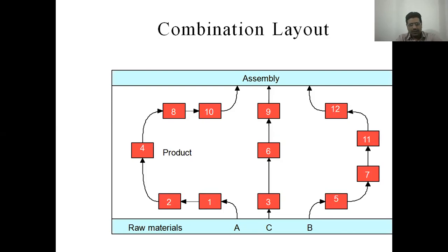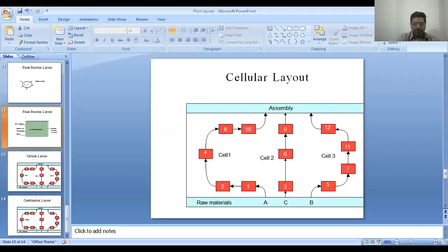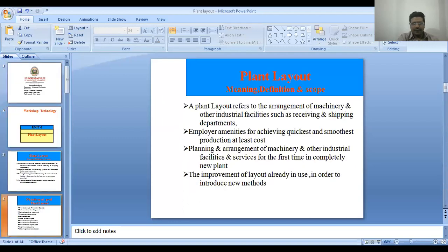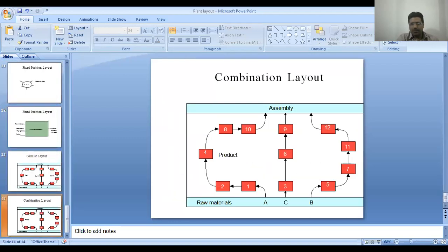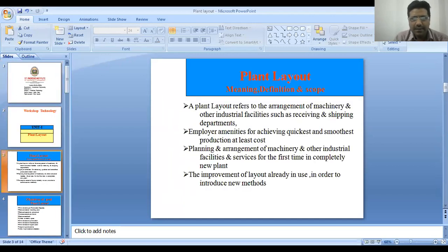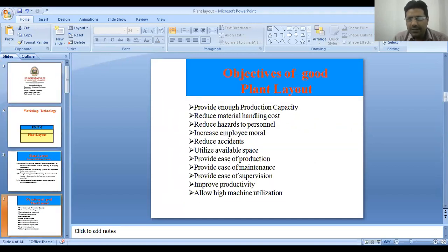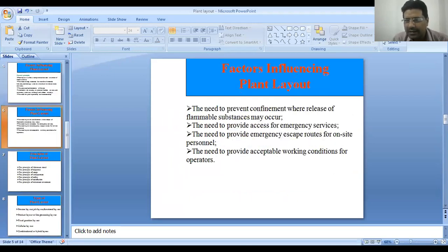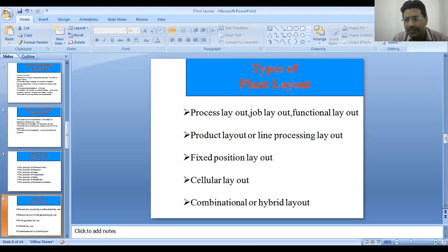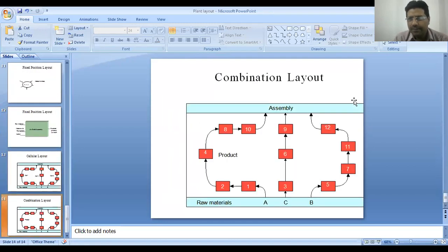So this was about plant layout — a complete unit. We discussed the definition and scope, then objectives of good plant layout, then factors, then principles, and then the types of plant layout. This is all about the manufacturing plant layout. Thank you.